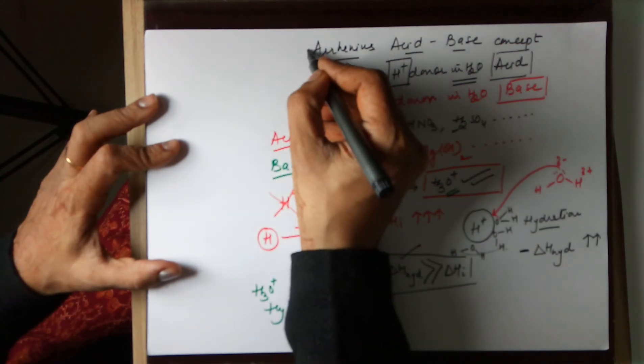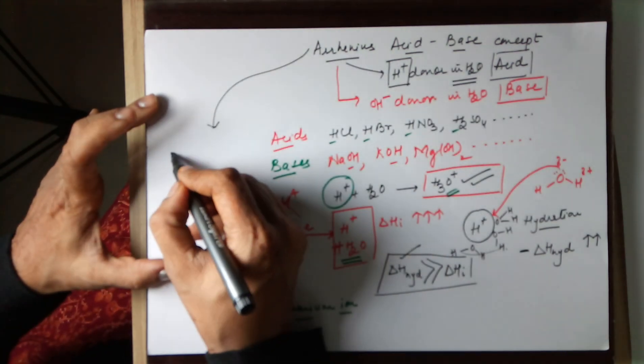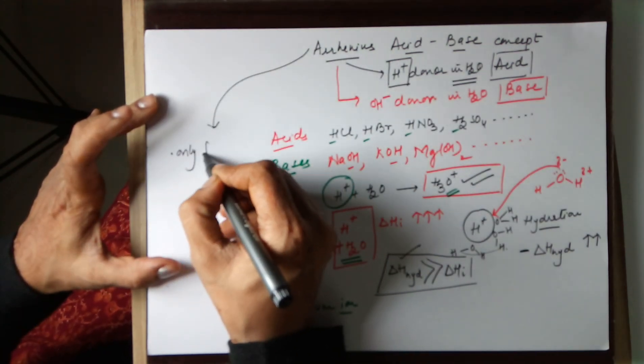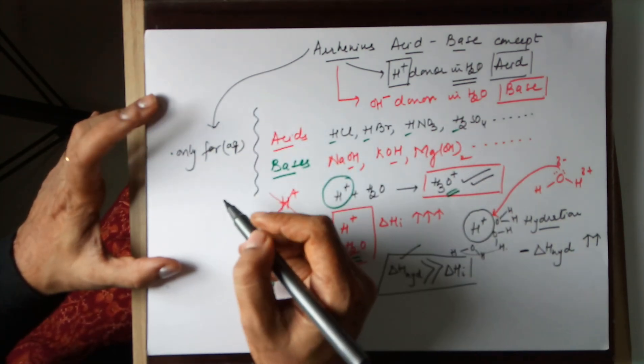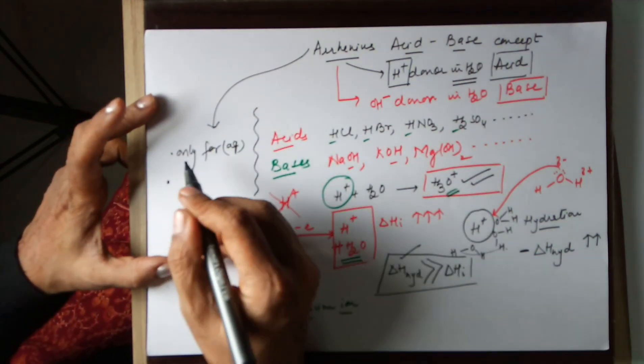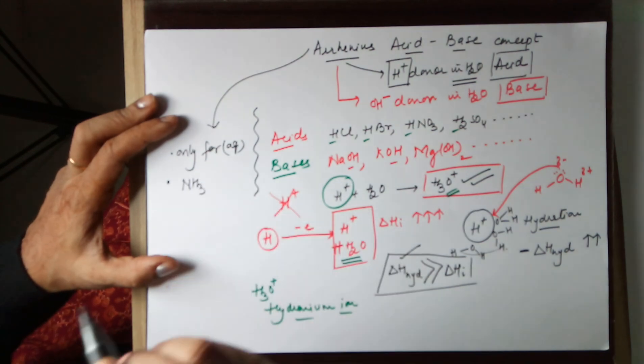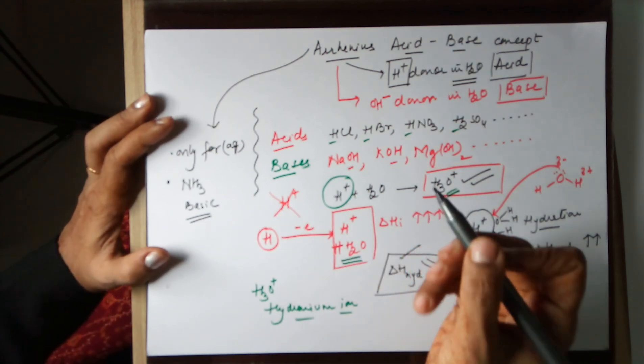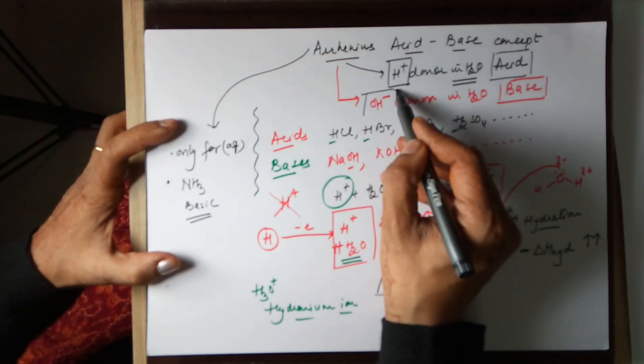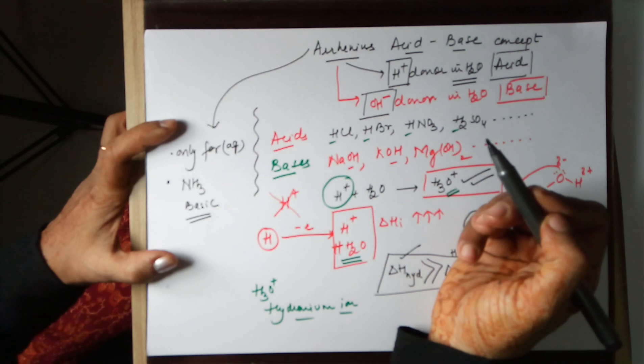Now the drawbacks. Firstly, it is only for aqueous medium. Secondly, Arrhenius could not explain the basicity of ammonia molecule. According to Arrhenius, a base has to have an OH- release.